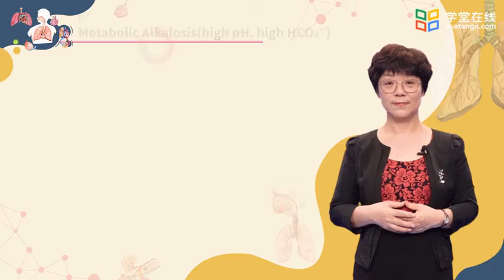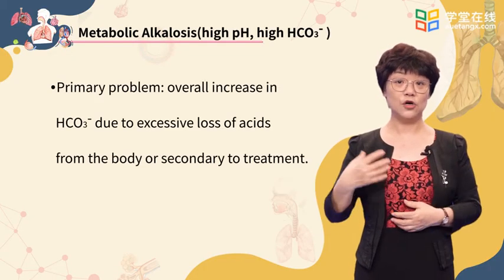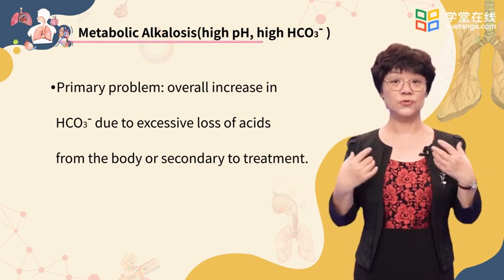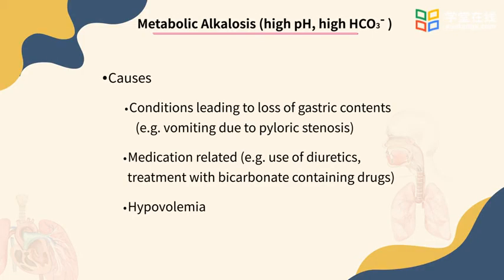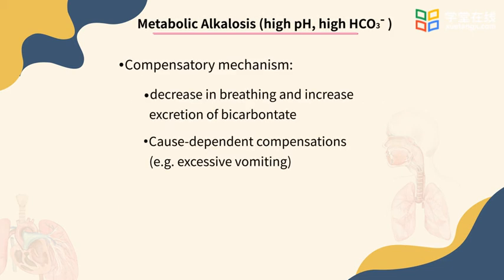Lastly, let's consider metabolic alkalosis. It is characterized by high blood pH and high blood bicarbonate, just opposite to metabolic acidosis. The primary problem in this condition is an overall increase in bicarbonate due to excessive loss of acids from the body or secondary to treatment. Causes include conditions leading to loss of gastric contents — for example, vomiting due to pyloric stenosis in infants — use of some medications like diuretics, and bicarbonate-containing drugs. The body tries to compensate by decreasing the rate of breathing and increasing the excretion of bicarbonate, with other compensatory mechanisms involved depending on the cause of the condition.